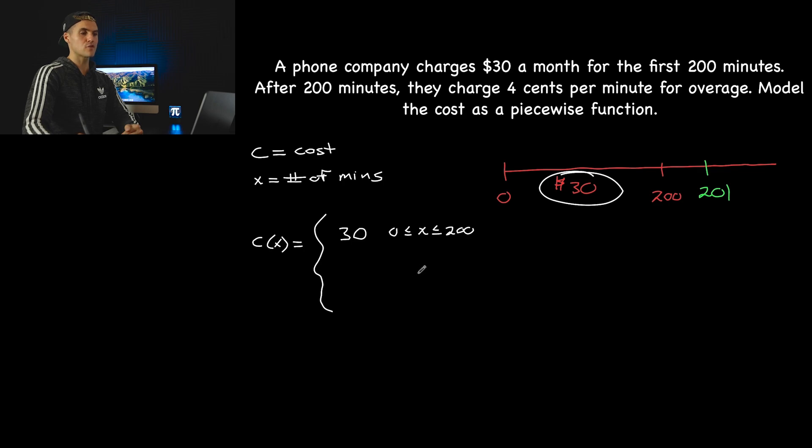So that is going to be here. It's just the cost. C of X is just going to be 30. It's going to be a horizontal line. It's going to be a flat fee for any minutes from zero to 200. Now, what about if you use the phone for greater than 200 minutes?